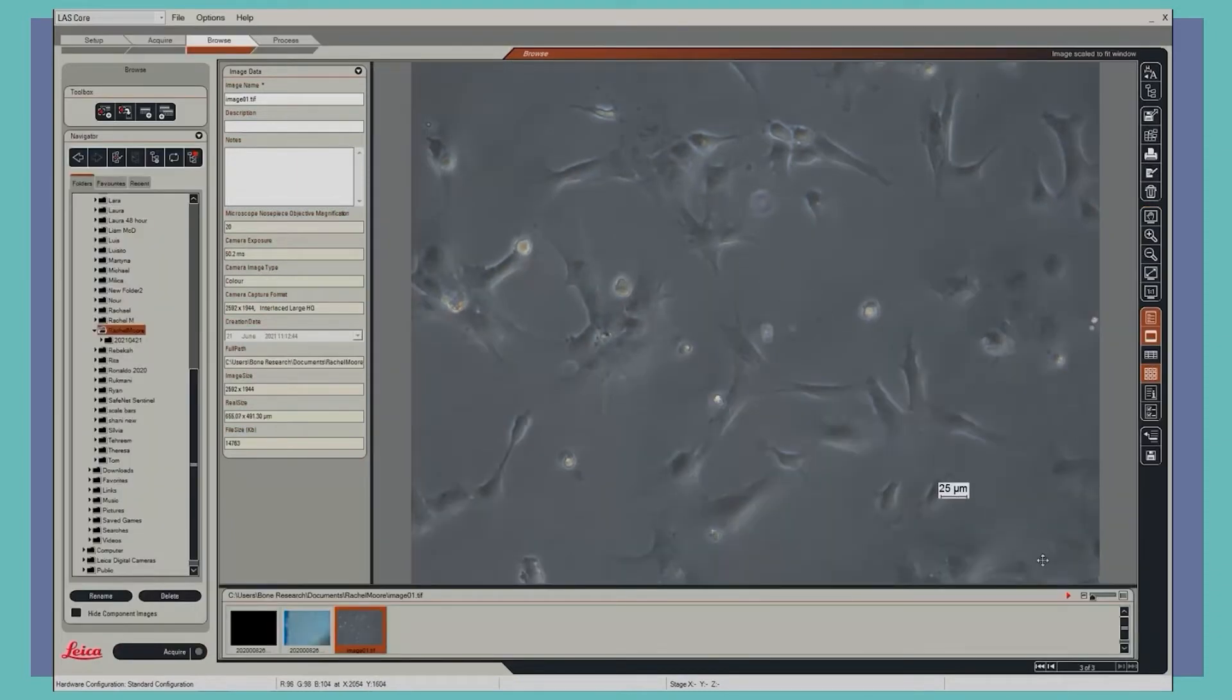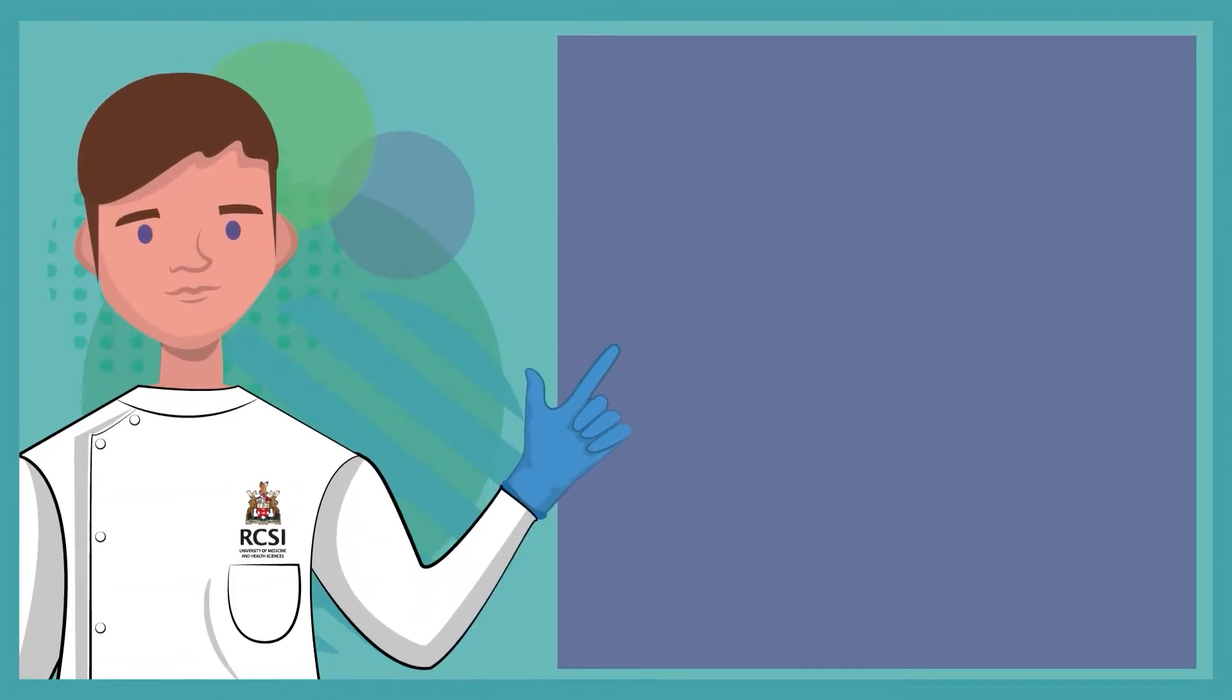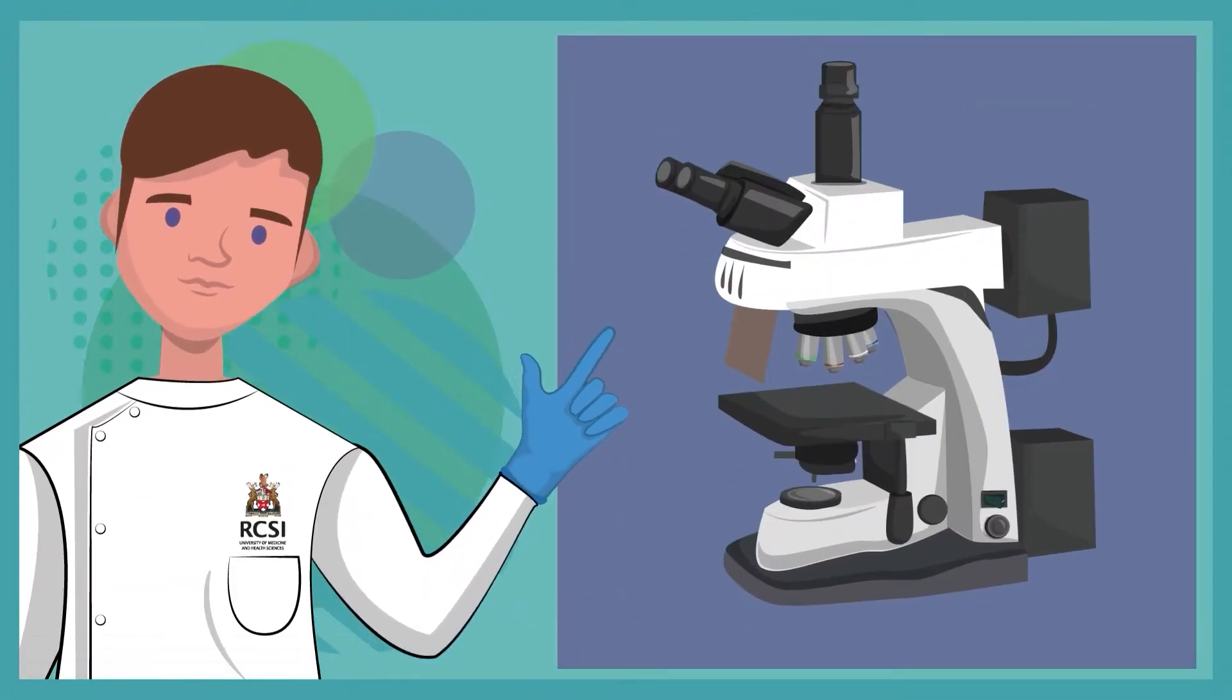Additionally, once you've acquired your image, you can also add a scale bar to help figure out what size of magnification you've acquired your image at. Next we'll be discussing how to use a fluorescent microscope.